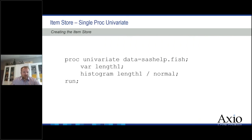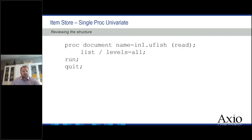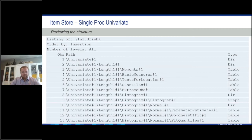Moving on to something more interesting — PROC UNIVARIATE. Again, just an ODS document sandwich. Note that I have a var statement and a histogram statement, so if you run this you might expect many pages of output. Think of that as many individual pieces of output that we might want to access independently. Using PROC DOCUMENT with a list statement, you get something that looks like a Windows directory structure with directories and tables. You can start to see different pieces of information that we can access at a later point without actually rerunning PROC UNIVARIATE.